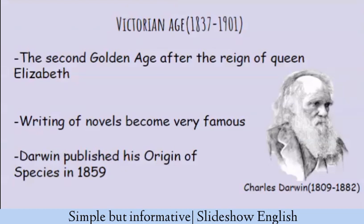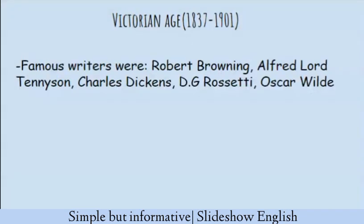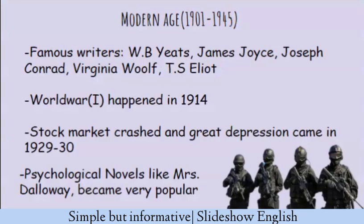After the Romantic Age, the Victorian Age starts in 1837 and ends in 1901. This is called the second golden age of English history after the reign of Queen Elizabeth. Charles Darwin wrote his famous Origin of Species in 1859. Oscar Wilde, Thomas Hardy, Charles Dickens, D.G. Rossetti, Alfred Lord Tennyson, and Robert Browning were the most prominent writers of this period.